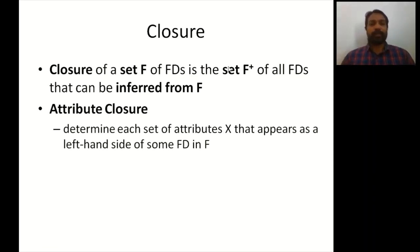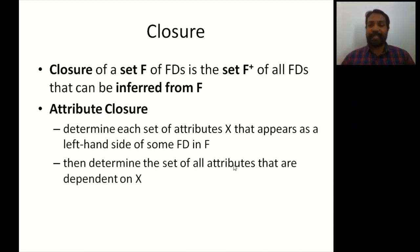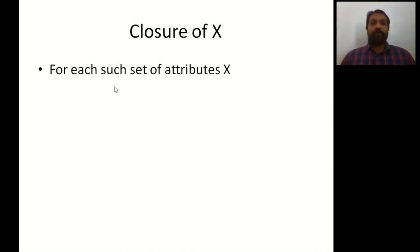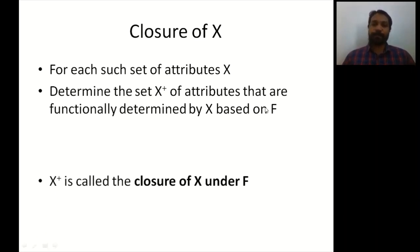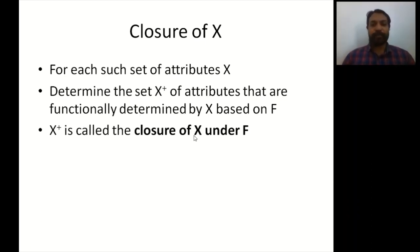To determine attribute closure, we take each set of attributes X that appears on the left-hand side of some functional dependency in F. We then determine the set of all attributes that are dependent on X. For example, for a student table, the admission number closure gives all attributes dependent on admission number. This set X+ is called the closure of X under F.